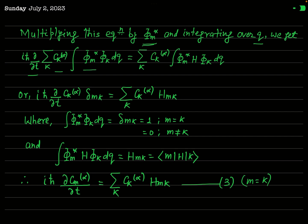We multiply this equation by φ_m* (the complex conjugate of φ_m) and integrate over q. The result on the left-hand side involves the integral of φ_m* φ_k dq, which is represented by the Kronecker delta δ_mk. So instead of that integral in the LHS, we write δ_mk.